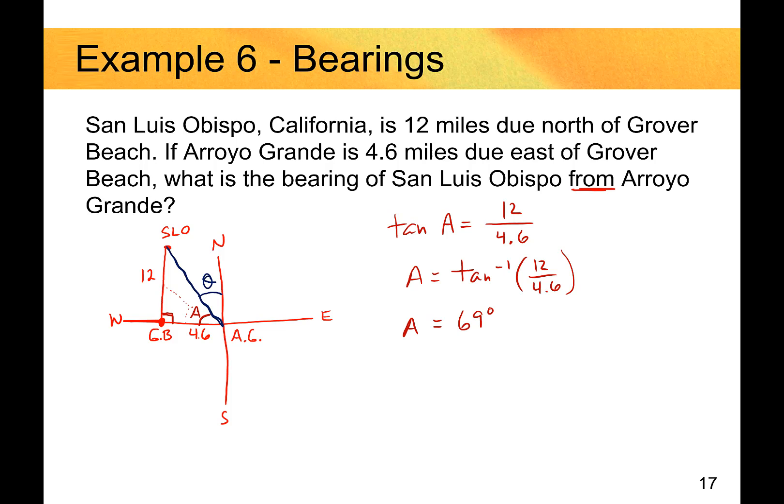That's angle A. What I really want is theta there. So I'm going to get the complement or subtract that from 90. That's going to give me 21. So the angle theta is going to be 21 degrees. And so what's the bearing of SLO from Arroyo Grande? It's going to be north 21 degrees west. There's my answer.